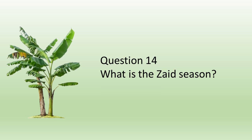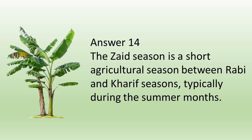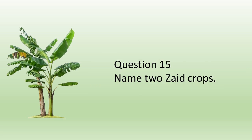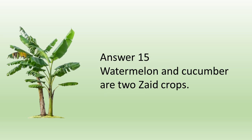Question number fourteen: What is the Zaid season? Answer: The Zaid season is a short agricultural season between Rabi and Kharif seasons, typically during the summer months. Question number fifteen: Name two Zaid crops. Answer: Watermelon and cucumber are two Zaid crops.